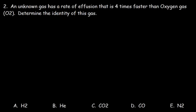Number two: an unknown gas has a rate of effusion that is 4 times faster than oxygen gas, O2. Determine the identity of this gas. Whenever you want to identify the identity of a gas, especially in a multiple choice problem, you need to calculate the molar mass, and then see which molar mass matches with the choices listed.